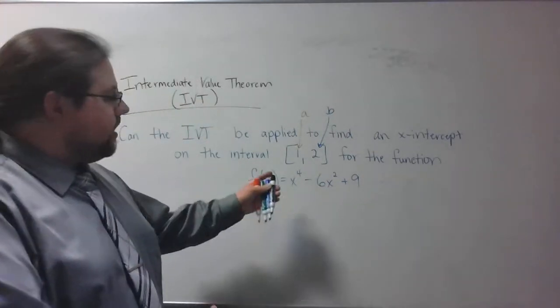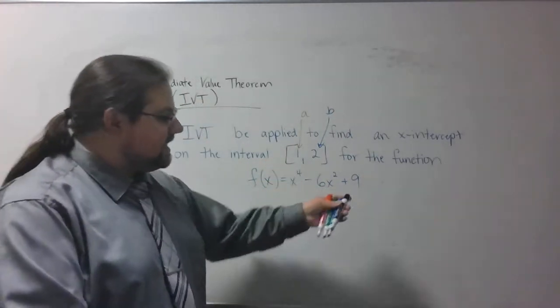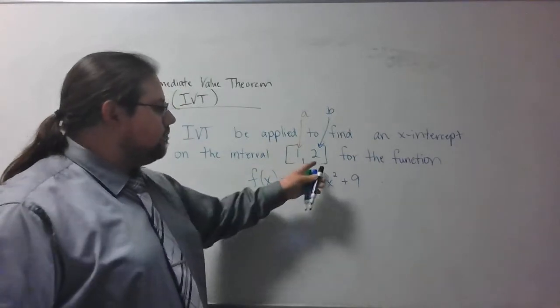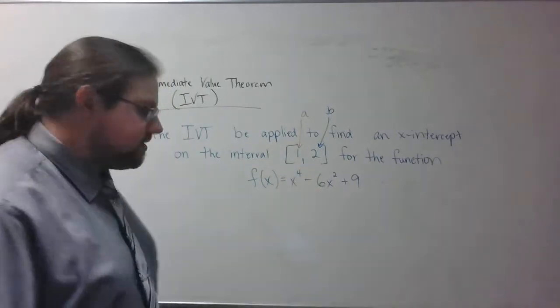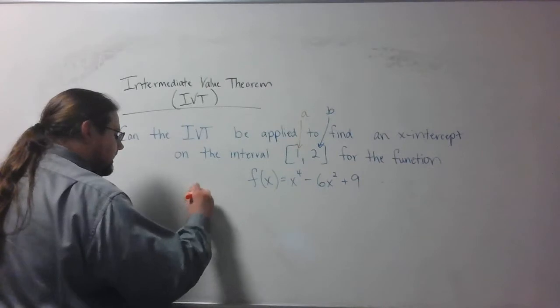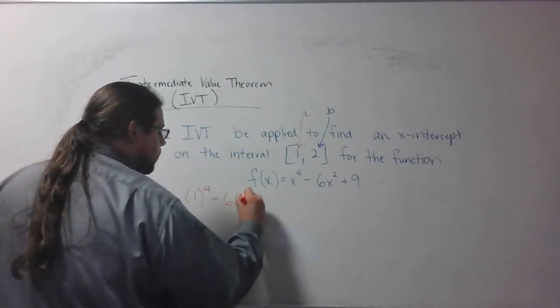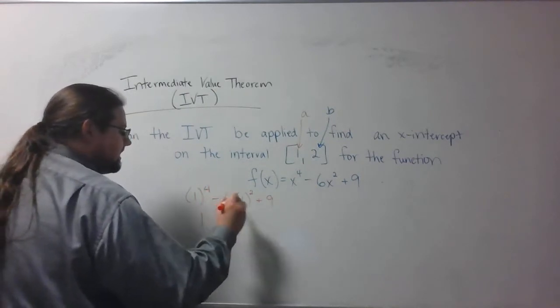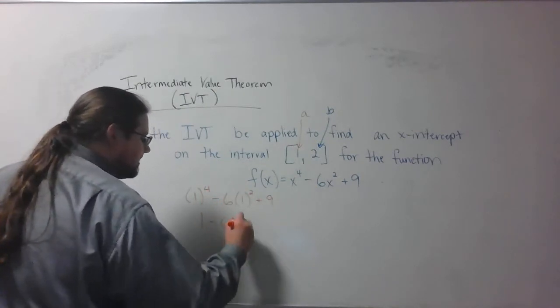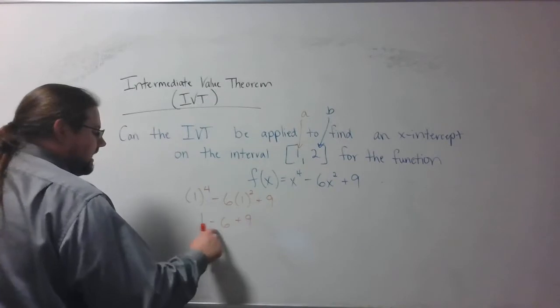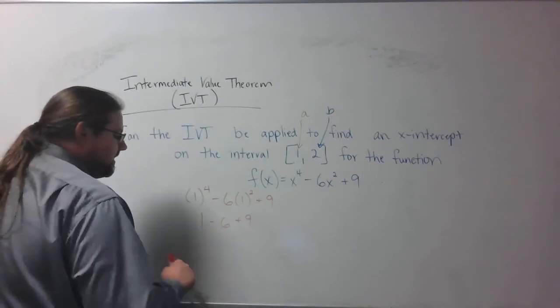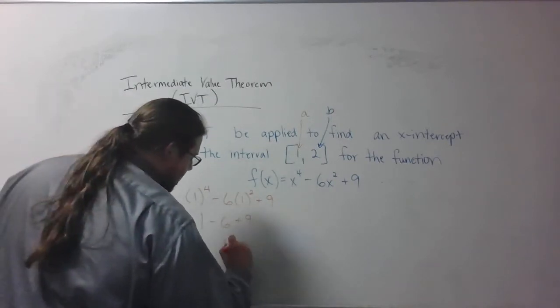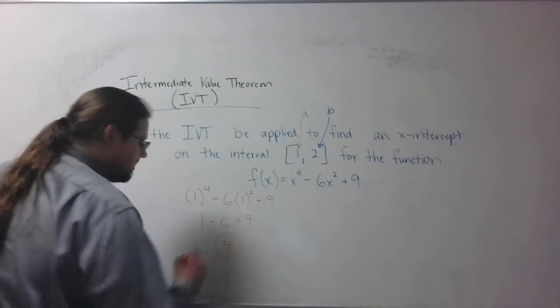What I'm going to do is plug in a. I'm going to plug in 1 into this and see what happens. Then I'm going to plug in b, plug in 2 and see what happens. 1⁴ - 6(1)² + 9. 1⁴ is 1. 6 times 1² is 6 plus 9. That's negative 6. 1 - 6 makes -5 + 9 makes 4. There's my first number.